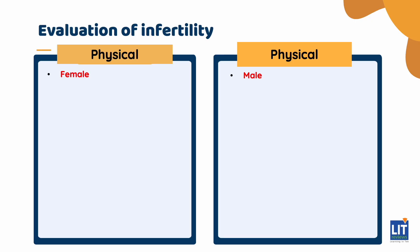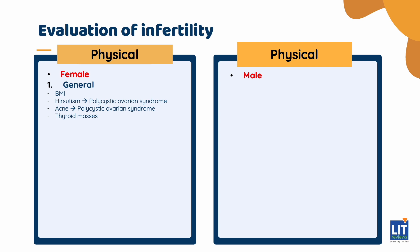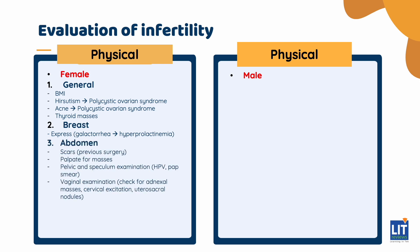For the female physical examination, include examination of the breast, abdomen, pelvis, and a general examination of other body systems. Determine the patient's BMI, as obesity affects infertility. Inspect for hirsutism and acne, which are common in polycystic ovarian syndrome, and look for thyroid masses. Chromosomal problems may reveal syndromic findings such as epicanthal folds, low-set ears, or webbed necks. For breast examination, asking patients to express galactorrhea may indicate hyperprolactinemia.